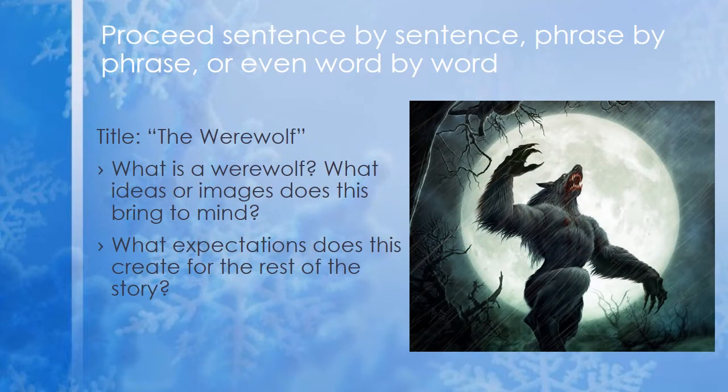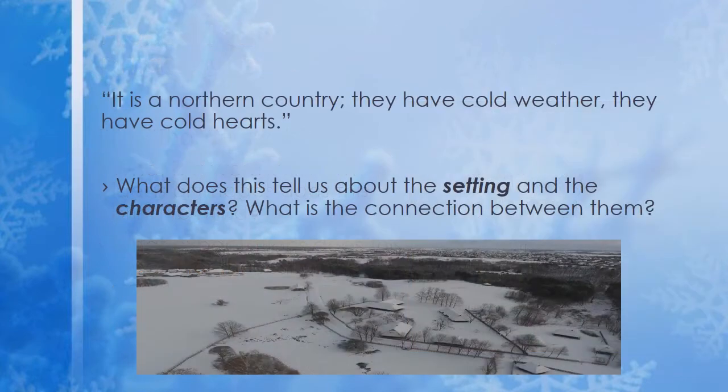Let's proceed sentence by sentence, phrase by phrase, even word by word, beginning with the title. The title is 'The Werewolf.' What is a werewolf? What images or ideas do you associate with a werewolf? A werewolf is of course something that is human but turns into a monster, turns into an animal. So it crosses over the barrier between human and animal — it is neither fully human nor fully animal — and so that makes it something of a monster through this hybridity. If the title is 'The Werewolf,' you expect to see a werewolf doing something important, something probably violent and bloody having to do with its wolf-like nature.